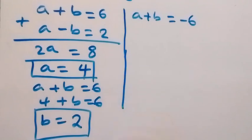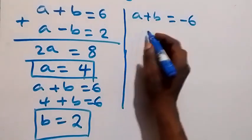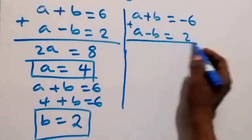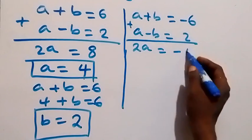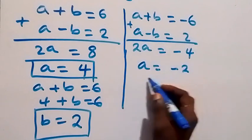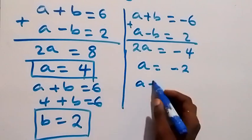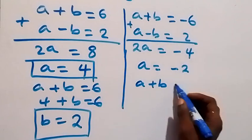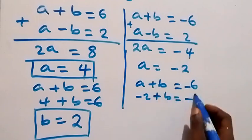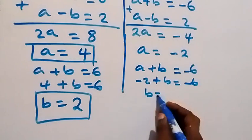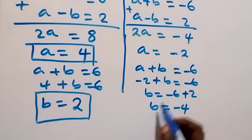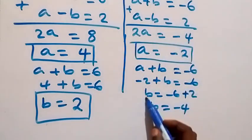We are still going to find the value of x. For case two, a + b equals minus 6 combined with a minus b equals 2. Adding gives 2a equals minus 4, so a equals minus 2. Then from a + b equals minus 6, we get minus 2 plus b equals minus 6, so b equals minus 4.